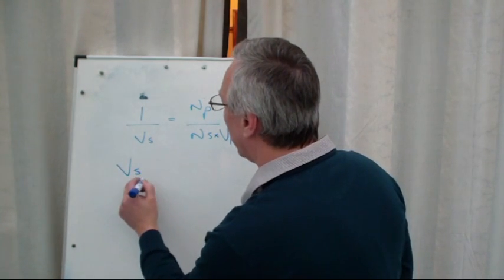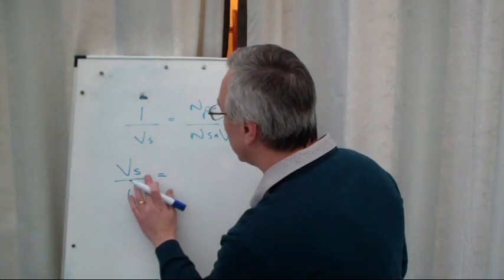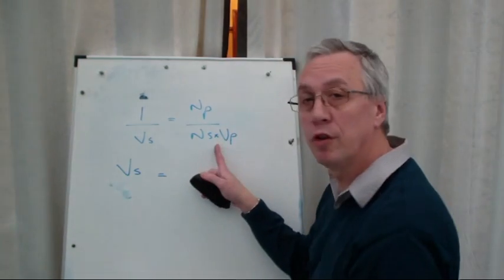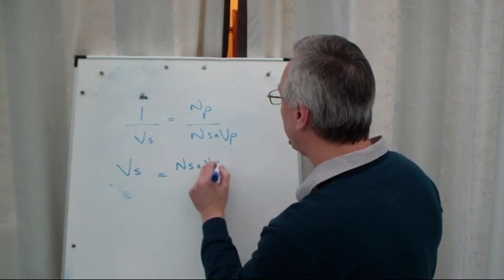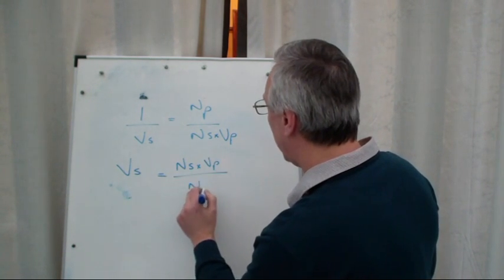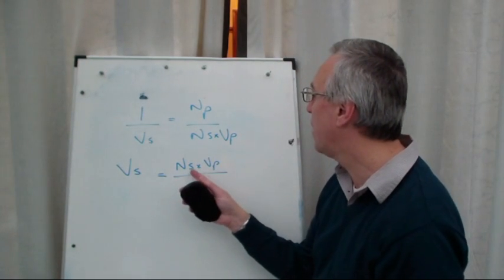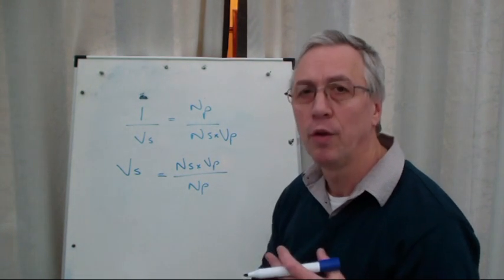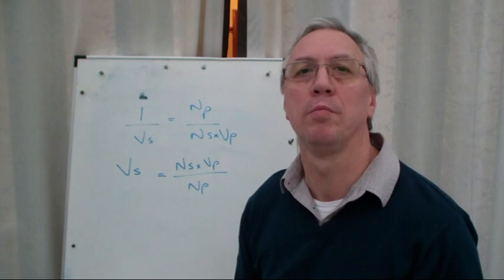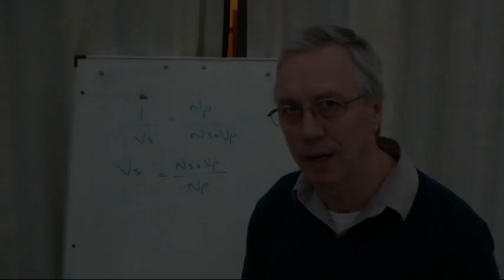So if we turn that upside down VS over 1, which is just VS, then we just need to turn this upside down. So put the NS and the VP on the top and the NP on the bottom. So then VS equals NS times VP divided by NP. Now, I know there's a lot to take in there, but if you replay the video a few times, hopefully you will begin to understand how it works. Thank you.